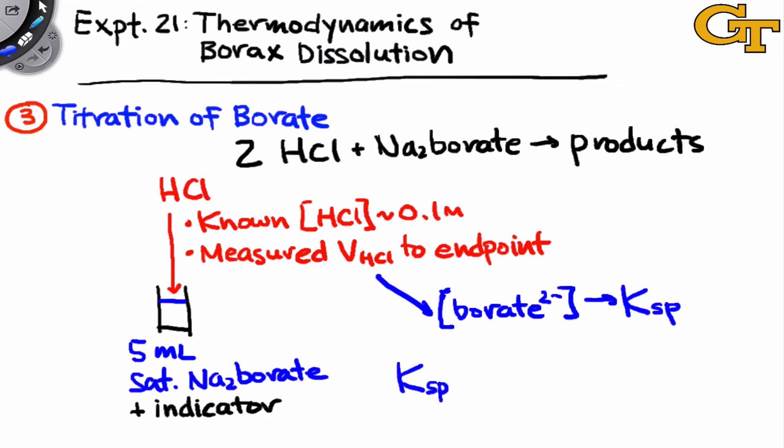Ultimately, we'll do this at three different temperatures, use the collected data on a plot of natural log of Ksp versus 1 over temperature, and determine delta G, delta H, and delta S for the dissolution of borax, or sodium borate.